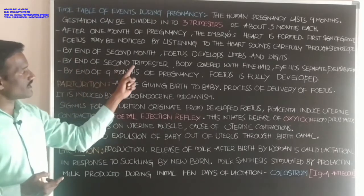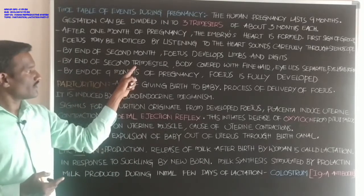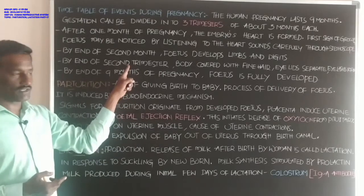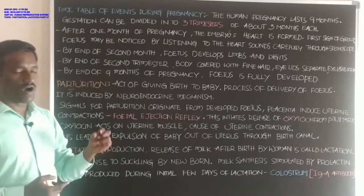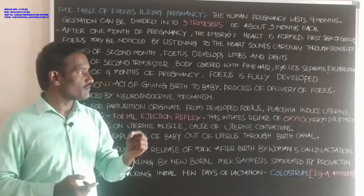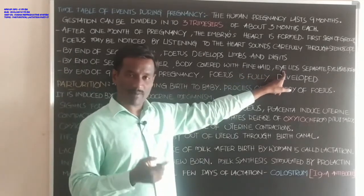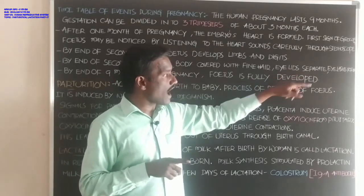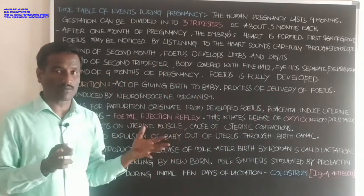By the end of the 2nd trimester, the body is covered with fine hair, eyelids separate, and eyelashes also form.